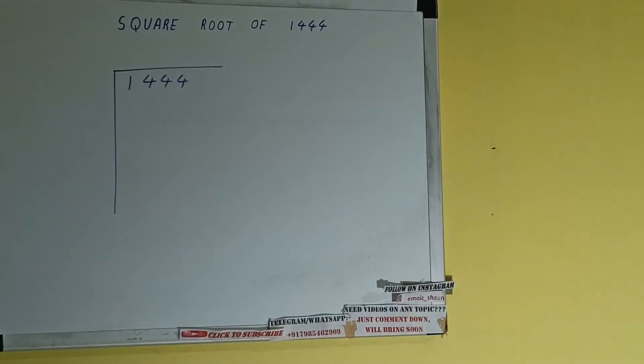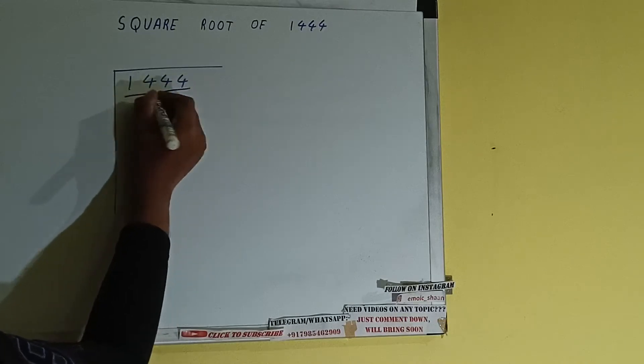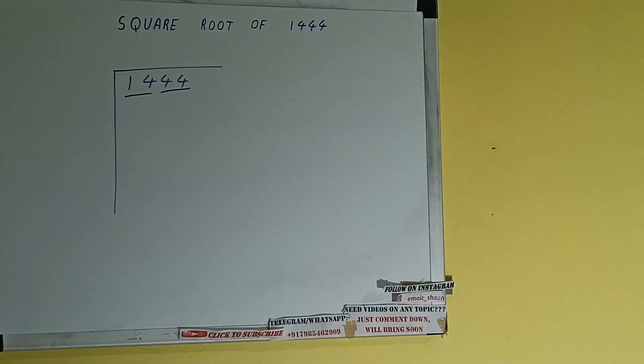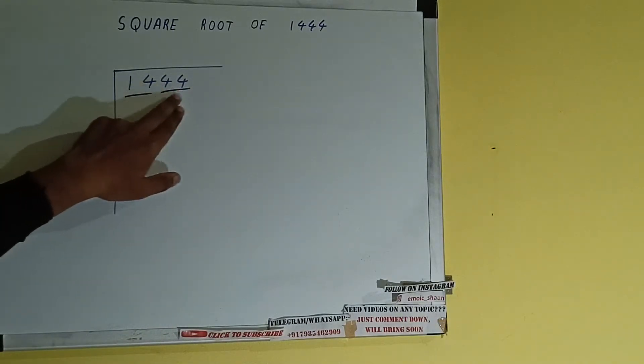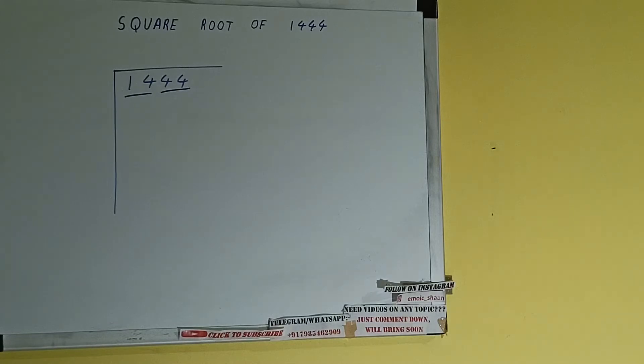The next thing we need to do is form pairs from the right hand side. So one pair will be this and another pair will be this. So first we'll divide this 14 and then we'll bring down the other pair. The rule is whatever number we write here, we have to write here also.